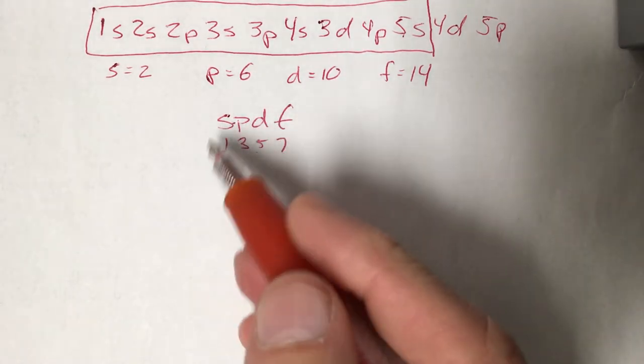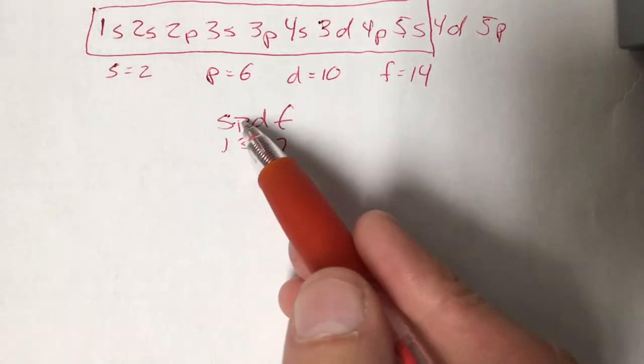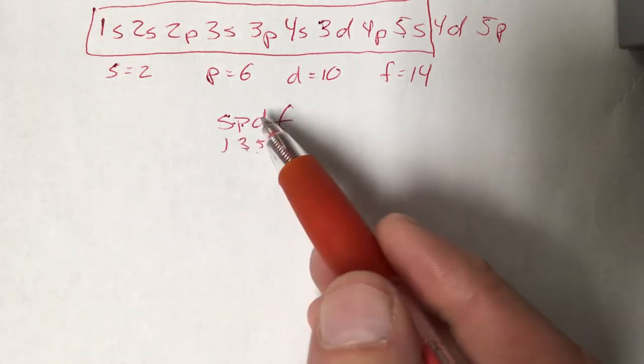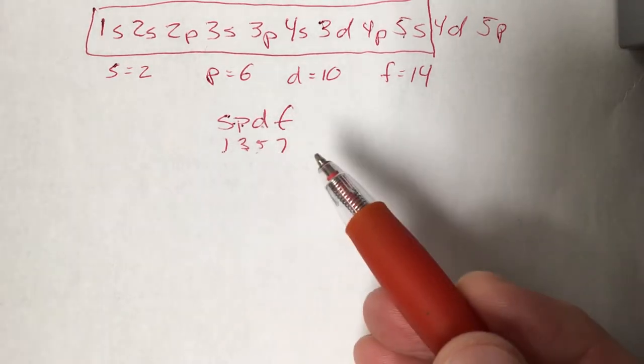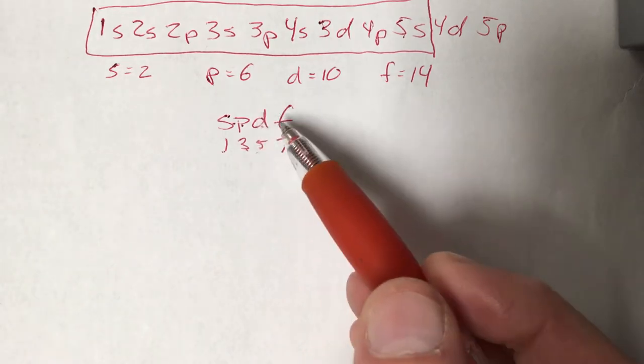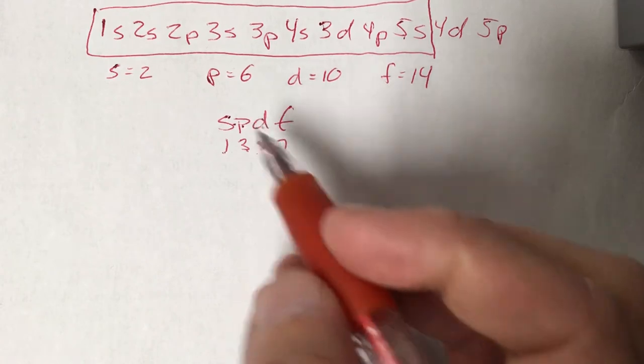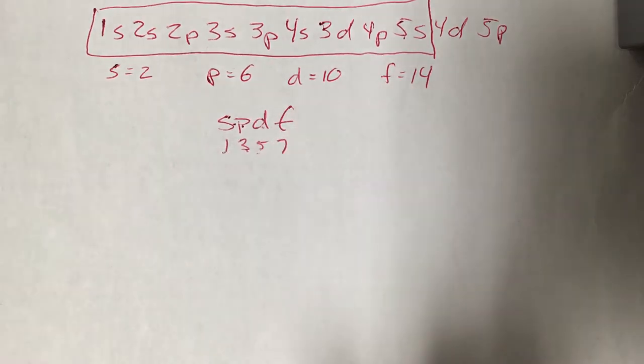So the s is a single orbital, there's no subcompartments or anything. p is actually a collection of 3 suborbitals, or 3 separate compartments. d is a collection of 5 suborbitals, or 5 separate compartments. Then f is a collection of 7 suborbitals, or 7 separate compartments. So again, it's just the odd numbers: 1, 3, 5, 7.